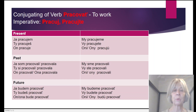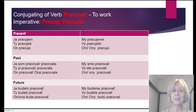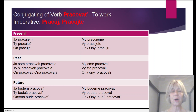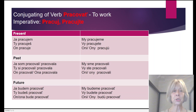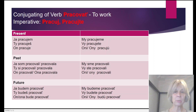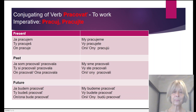Negative is formed exactly the same way: Ja ne pracujem. Ty ne pracuješ. On ne pracuje. My ne pracujeme. Vy ne pracujete. Oni ne pracujú. And so on. Question is formed by intonation: Pracujem? Ja pracujem? Ty pracuješ? On pracuje? Word order is not fixed in Slovak language, so you can change it. Very often in Slovak, we omit the pronoun — you can say 'ja pracujem,' or 'pracujem ja,' or just 'pracujem.'